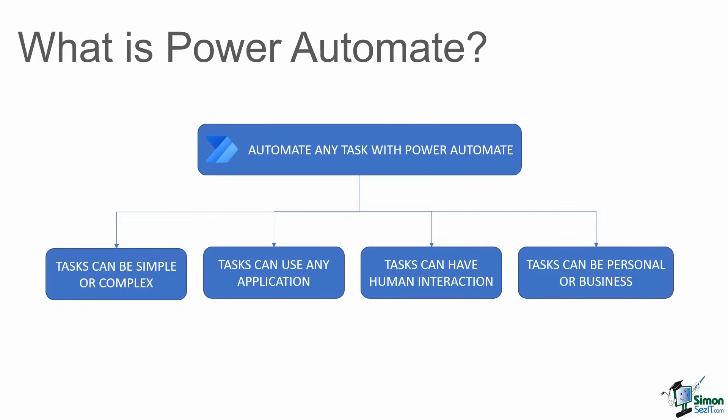The tasks that you automate can also be personal or business. Maybe you want to create a workflow that does something very simple like sending out an email or a notification, or maybe you want your workflow to be more business-focused such as approving documents, holiday requests, expenses, or invoices. The whole idea of Power Automate is that we are automating repetitive tasks.